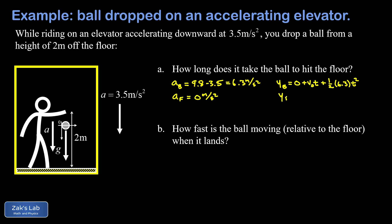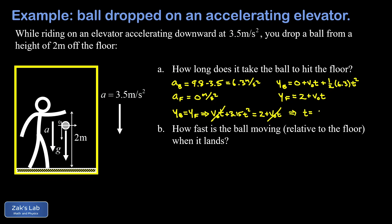Writing the y-coordinate of the ball in this new coordinate system: initial y is zero, plus v₀t, plus one-half × 6.3 × t² = 3.15t². The floor's y-position is just 2 + v₀t, with acceleration zero. Setting them equal, the v₀t terms cancel, leaving 3.15t² = 2. Dividing by 3.15 and taking the square root gives the same 0.797 seconds.